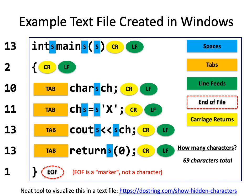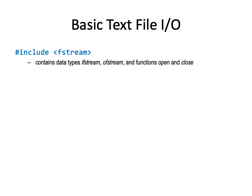So Windows has an extra character. If you ever try to open a file in Windows that was created on Mac or Linux, it might look a little funny, and vice versa. How do we do basic text file input and output? The first thing to do is to #include fstream. fstream stands for file stream, kind of like how we have iostream being input-output stream. fstream will have data types such as ifstream (input file stream), ofstream (output file stream), and a few other functions and variable types as well.